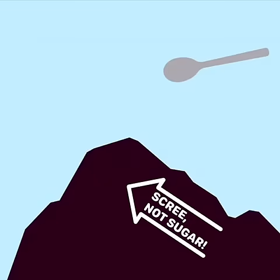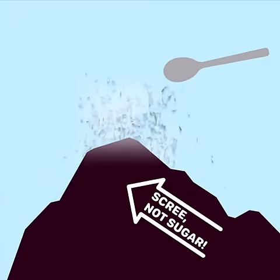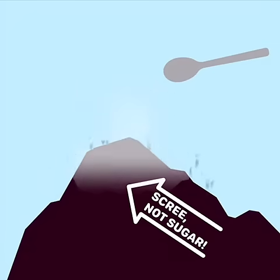The Sugar Loaf gets its name because, from afar, the weathered scree on its peak looks as if it has been sprinkled with sugar.